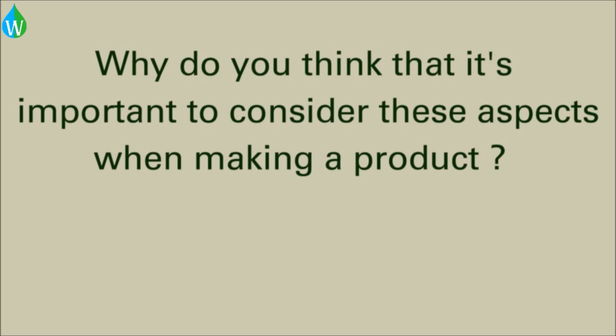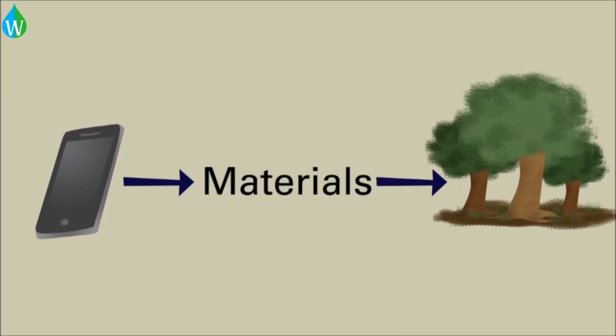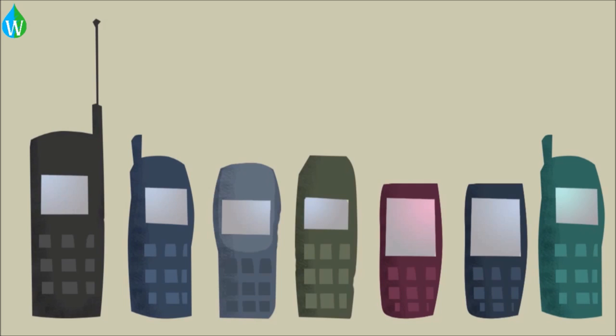Why do you think it is important to consider these aspects when making a product? When a device is manufactured, the materials it's made from can have a huge environmental impact. With the wide scale use of mobile or cell phones since the 90s, not a lot of thought went into the materials used to make them.